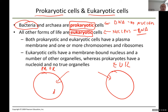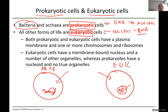For prokaryotes, DNA is found in a region inside the cell. For eukaryotes there is a nuclear membrane — another type of membrane — and inside this nuclear membrane is where DNA is stored. Eukaryotes have this nuclear membrane because their cells and organisms are much more complex.